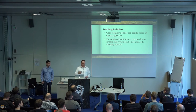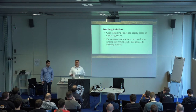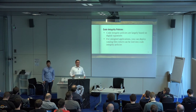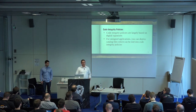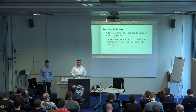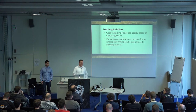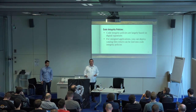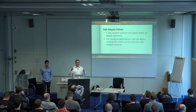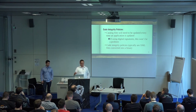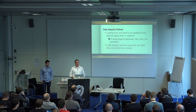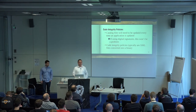Code integrity policies are largely based on digital signatures. If you digitally sign your applications — maybe developed internally, or if you use software signed by some third party authority — it's going to make your life a lot easier when managing code integrity policies. You can manage trust significantly easier than with unsigned applications. For unsigned applications, you can create catalog files and roll those up into your code integrity policy, saying you want to trust and allow a specific application.